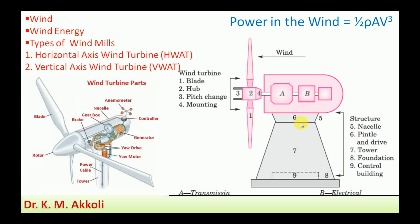The sixth part is the pin turn which supports the nacelle and drive. The seventh is the tower — the windmill is always mounted at a certain height from the ground because wind velocity increases as you move upward, so it is mounted on the tower. Eighth is the foundation to support the tower, and ninth is the control building for power transmission.